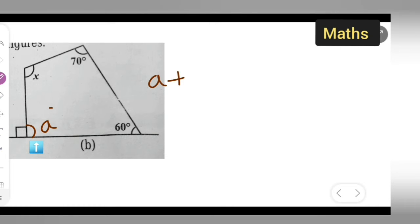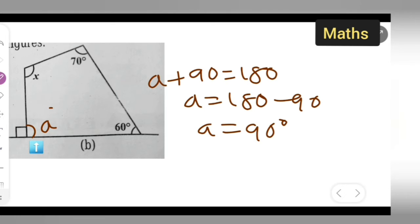So if we do a plus 90 equals 180, then a is equal to 180 minus 90. If you do this, you will get a to be 90 degrees. You can write it down to be 90 degrees.